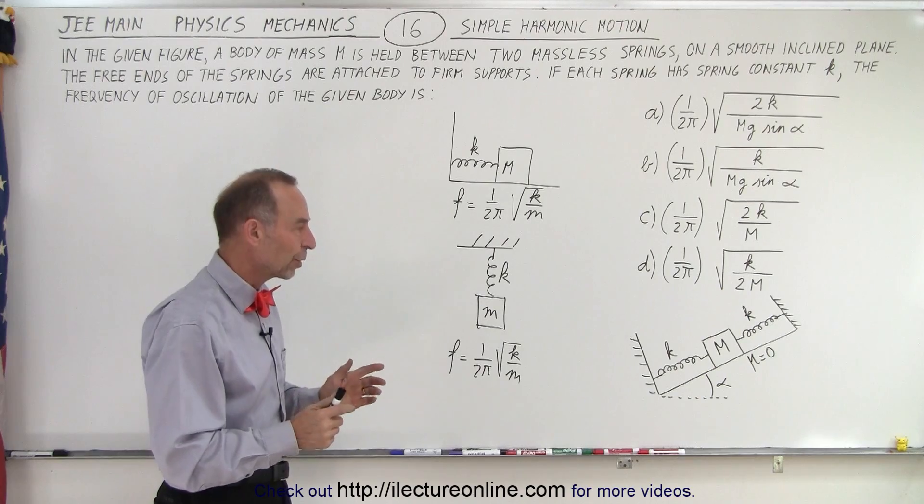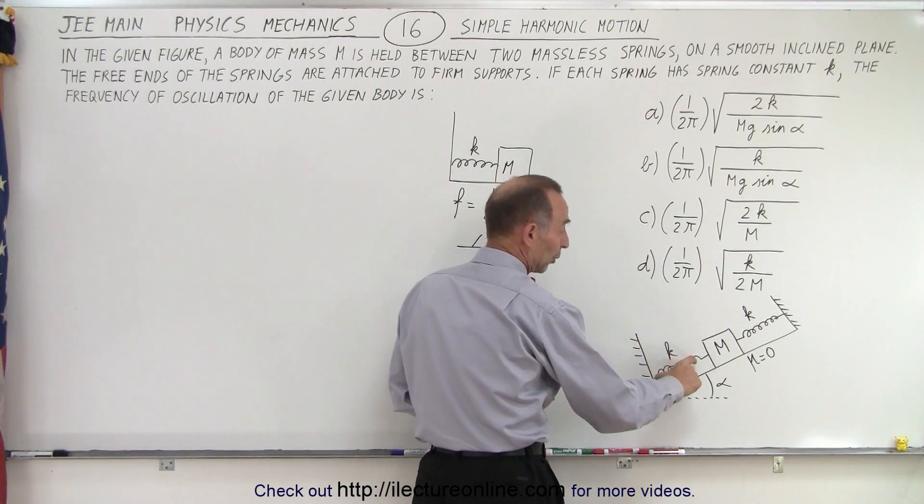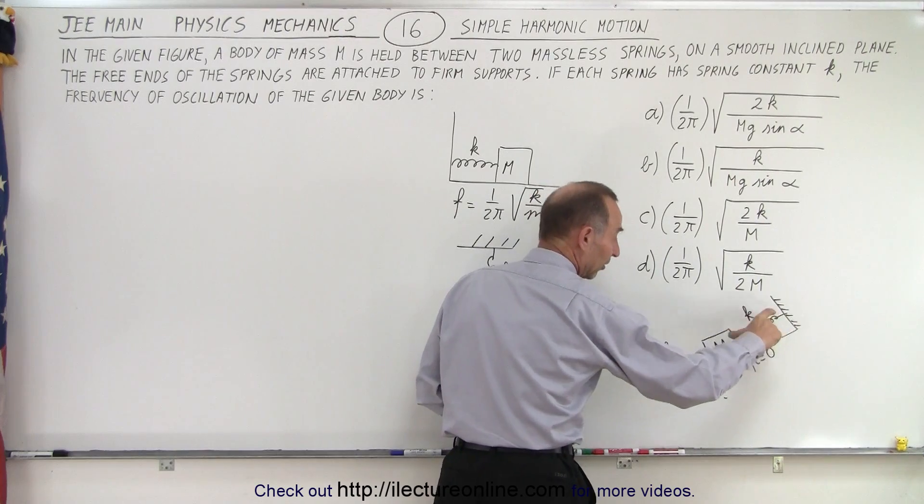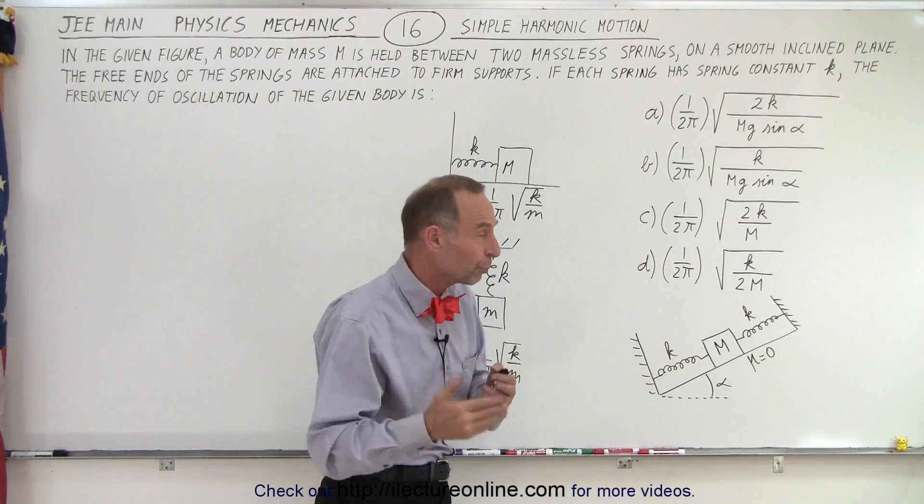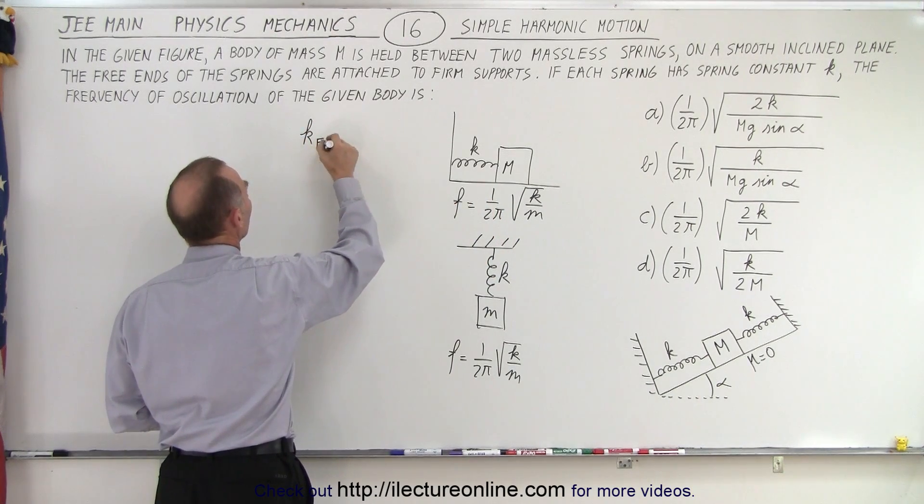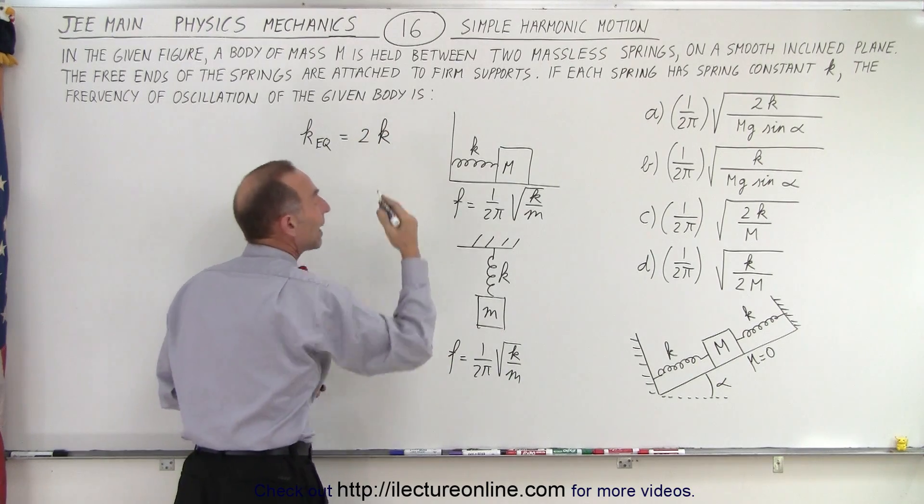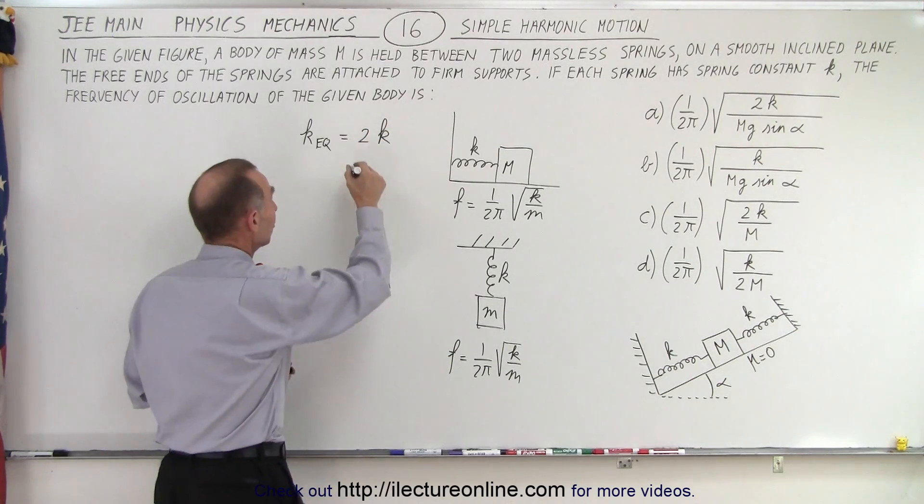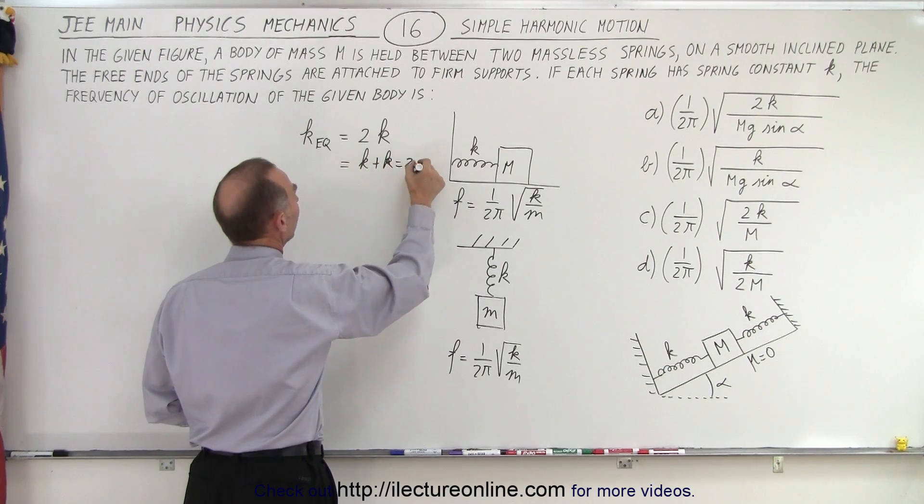Secondly, we have to worry about the fact now that we have two springs. And does it matter if both of these springs are on one side, or one is on this side and the other one is on that side? The answer is no, it doesn't matter. But there are two springs, so in this case, the K equivalent of having two springs like that is equal to both of them added together. It's essentially K plus K, which is equal to 2K. So the equivalent spring constant of both springs acting on the same mass is 2K.